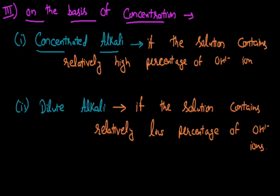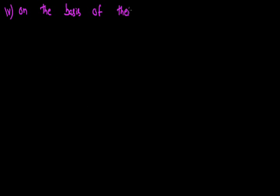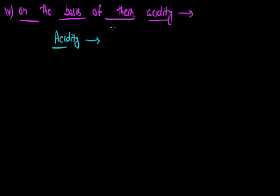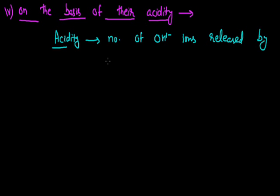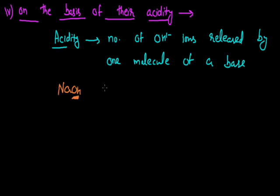Now we will deal with the next classification, which is on the basis of acidity. Before we move to this classification, we need to know what we mean by acidity here. When we talk about the acidity of any base, it represents the number of replaceable hydroxyl anions released by one molecule of a base. For example, one molecule of sodium hydroxide contains only one hydroxyl anion, so it will release only one hydroxyl anion whenever it participates in a reaction, meaning its acidity is one.